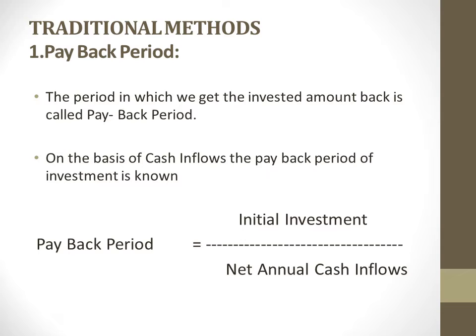If net cash inflow remains the same in all years, the payback period is calculated by dividing initial investment by net annual cash inflows. The decision rule is: a project is accepted if its payback period is less than the maximum payback period set by top management. If there are multiple options, the project with the shortest payback period will be selected.